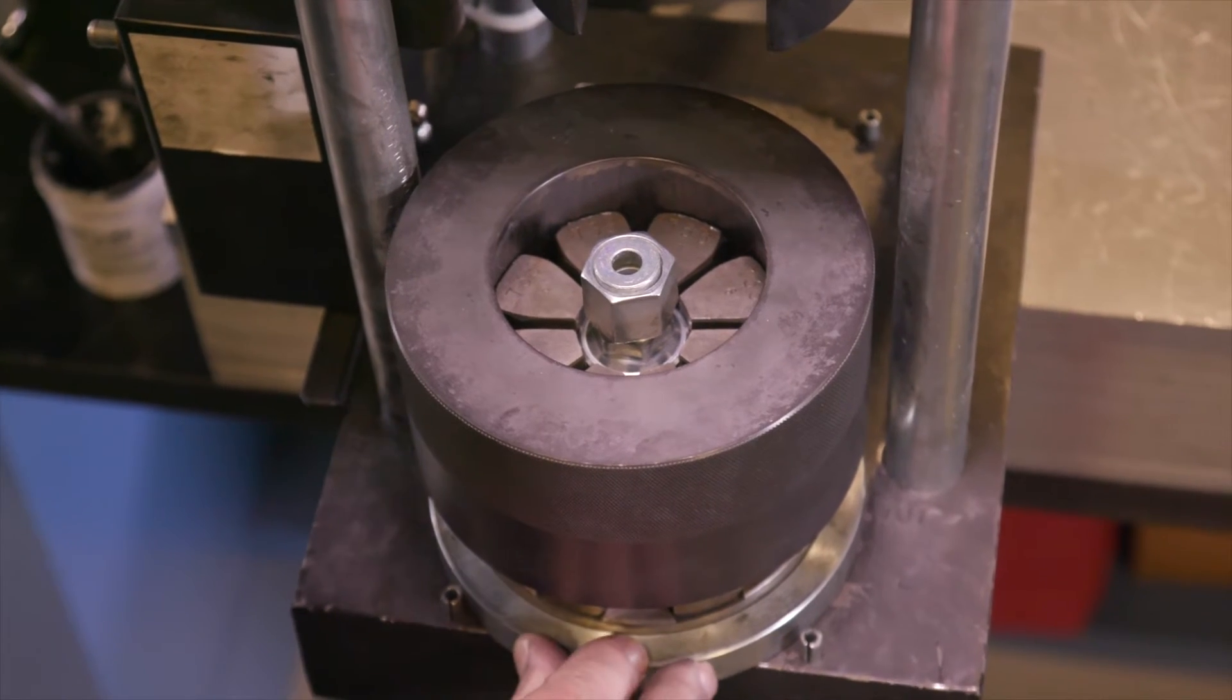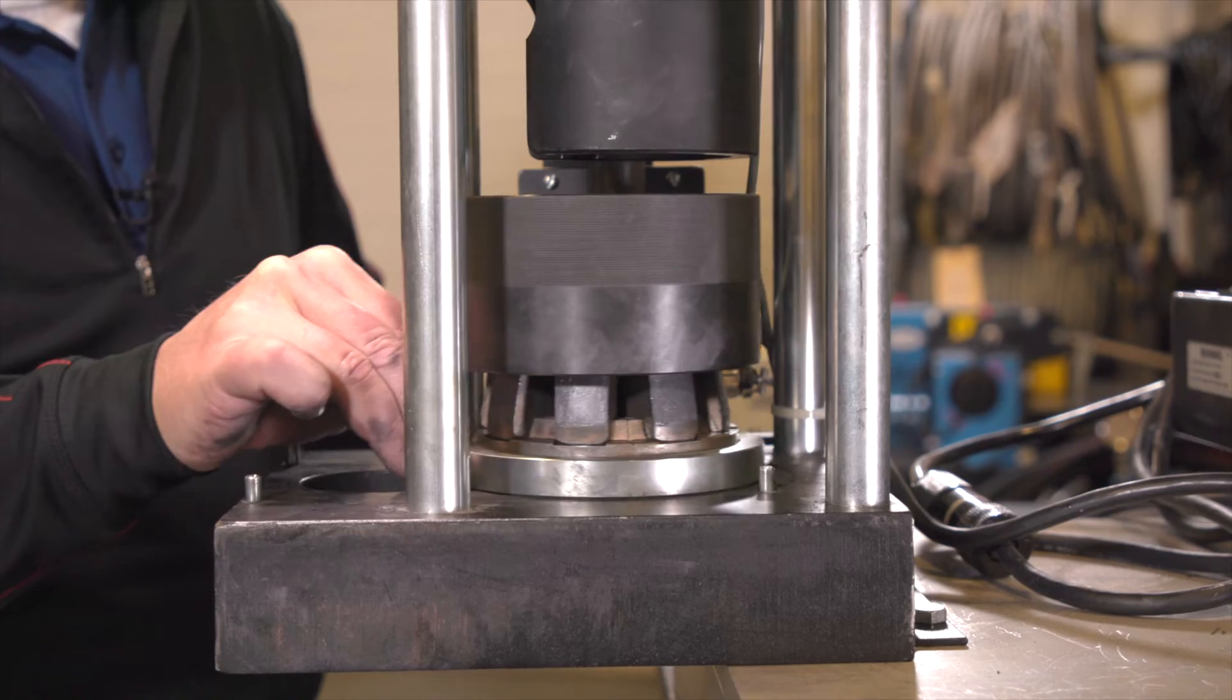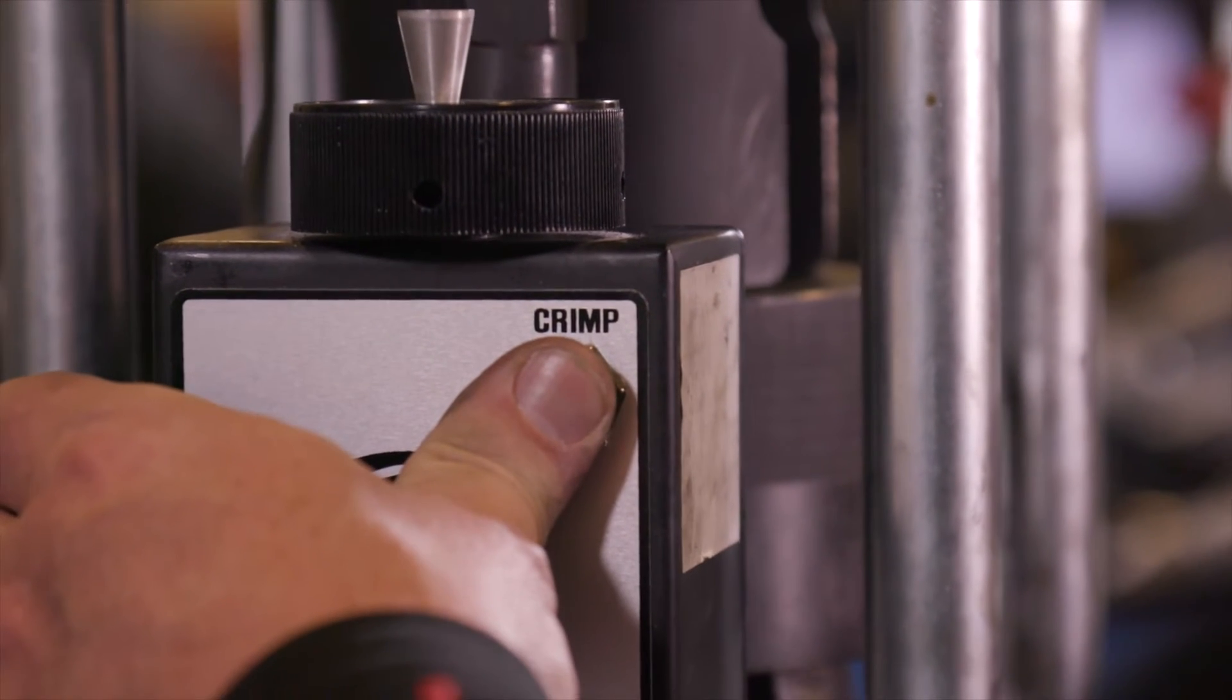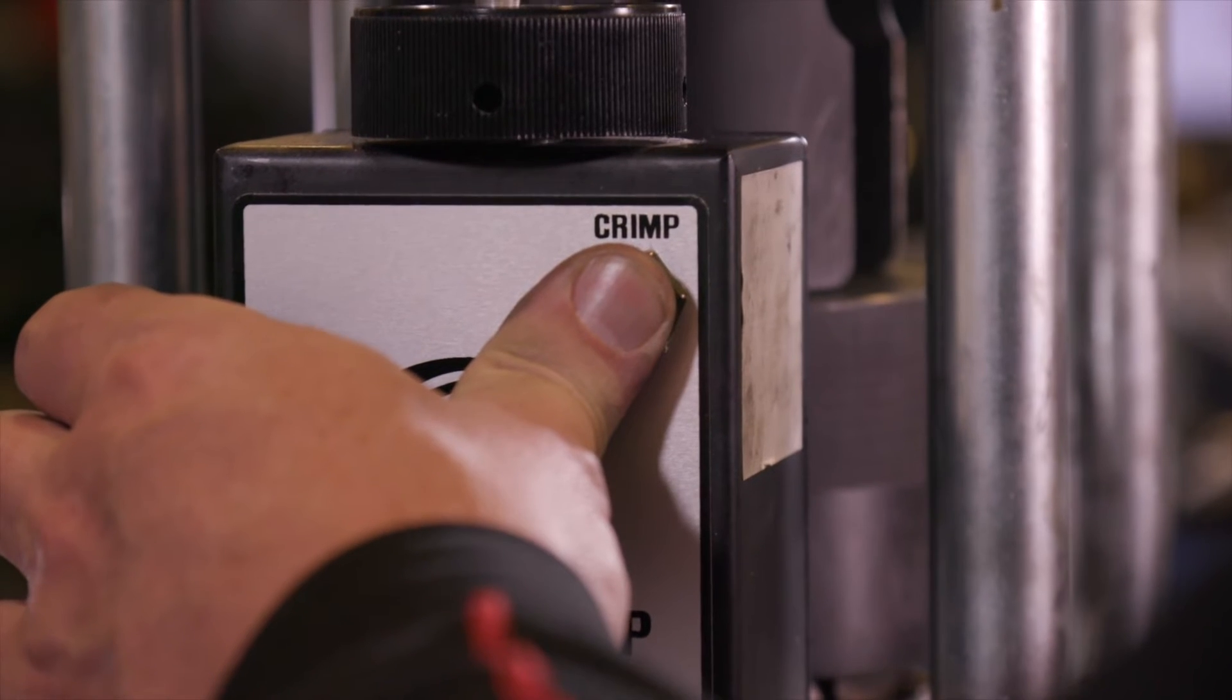Slide the die cone assembly under the ram until it stops against the back locating pins. Push the crimp button and hold. Release the button immediately when the pump stops.